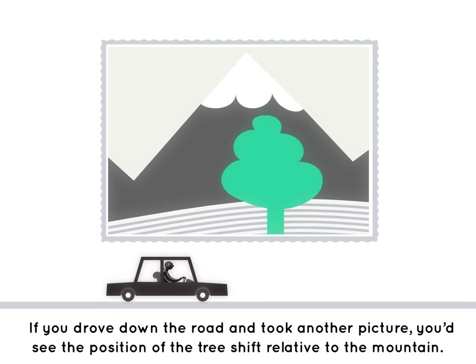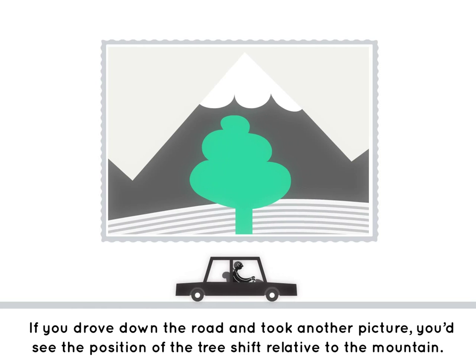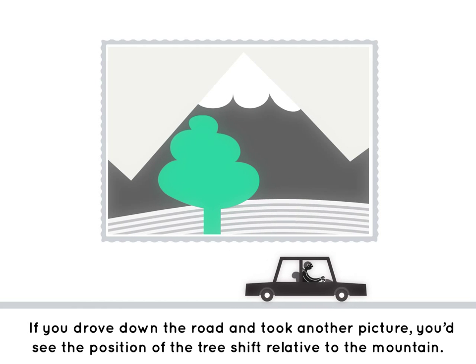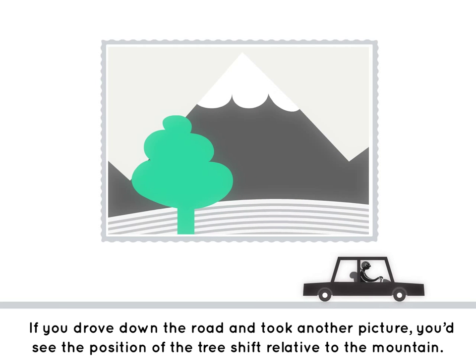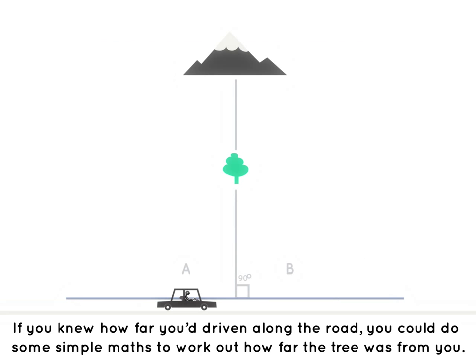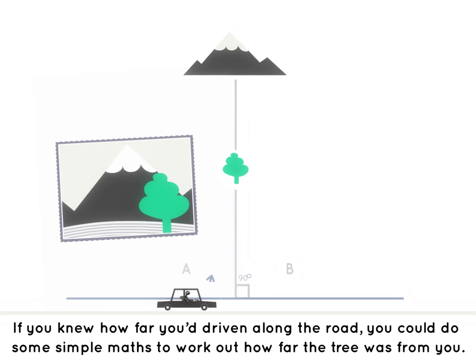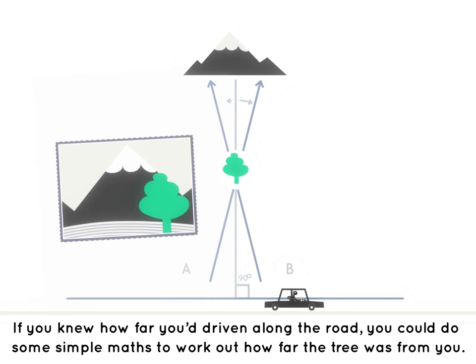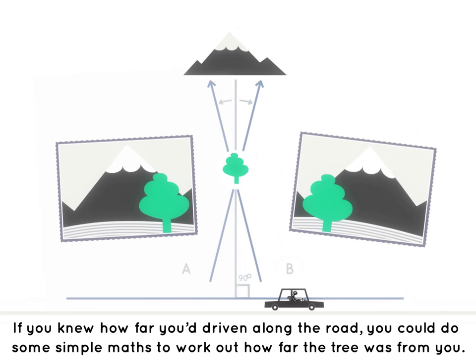If you drove down the road and took another picture, you'd see the position of the tree shift relative to the mountain. If you knew how far you'd driven along the road, you could then do some simple maths to work out how far the tree was from you.